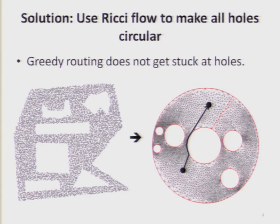Do all the sensors need to know about all the holes in the network? No, they don't need to. This is a virtual coordinate. We compute this embedding so every node remembers its position in the new embedding, and we use a location service to do the translation between node ID and its virtual coordinate. So why do circular holes always work?